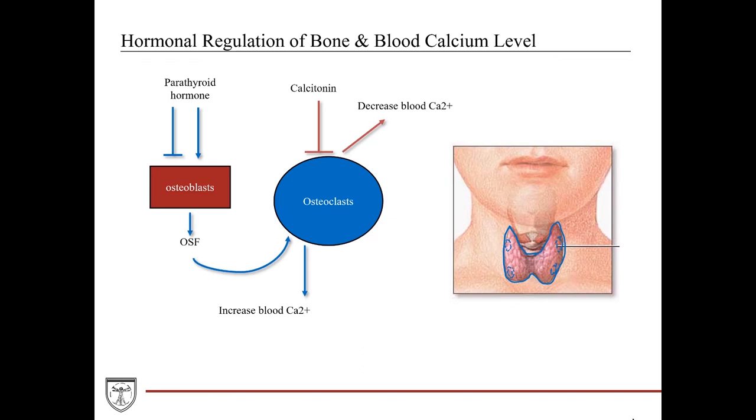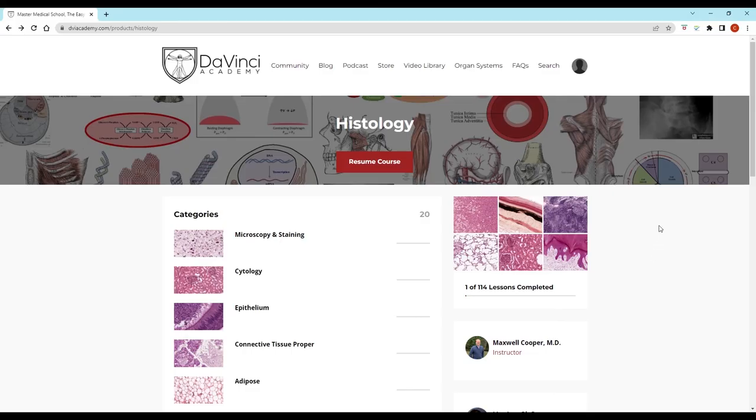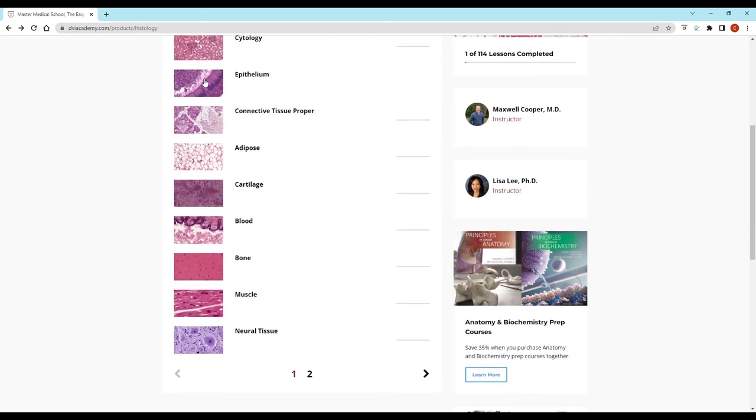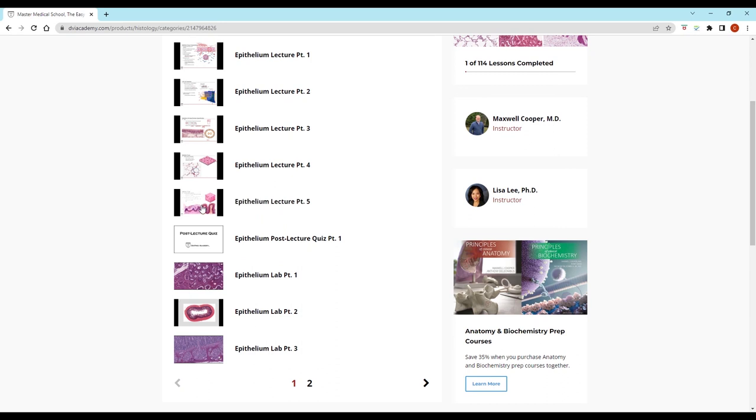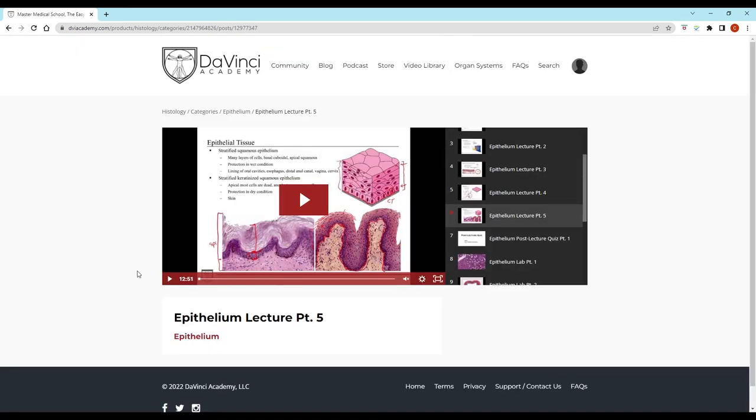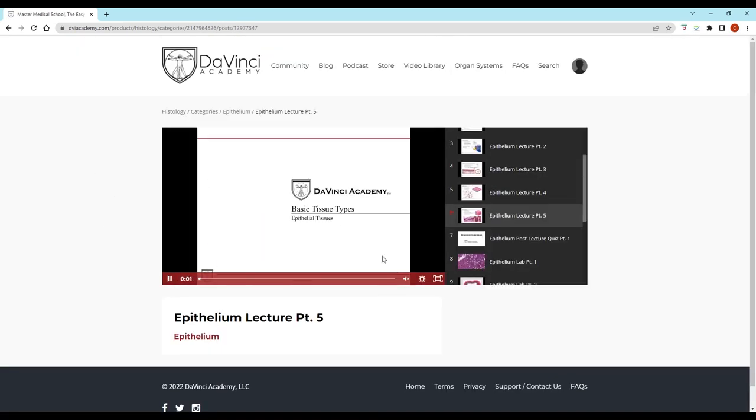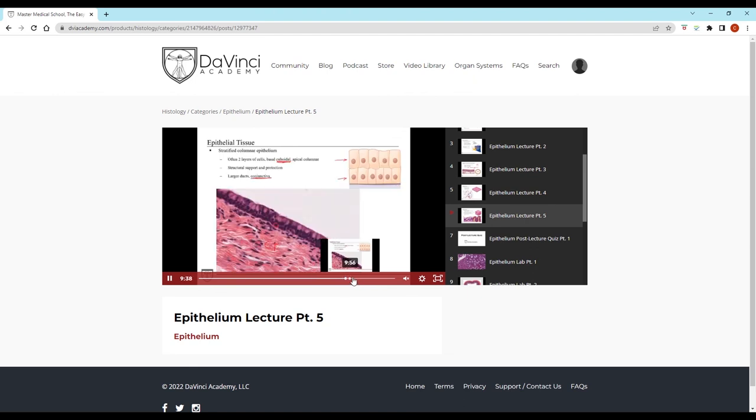When there's hypercalcemia detected in patients' blood, oftentimes the overactive parathyroid glands are suspected. Thank you for watching this video from the DaVinci Academy Histology video course, which is completely available on YouTube. To access the corresponding practice questions and histology lab videos, go to our website using the link in the description below.